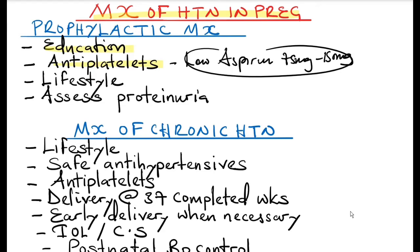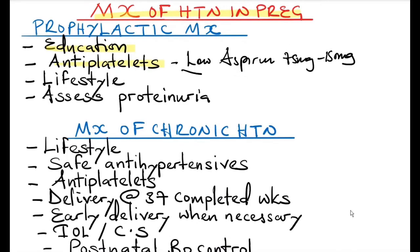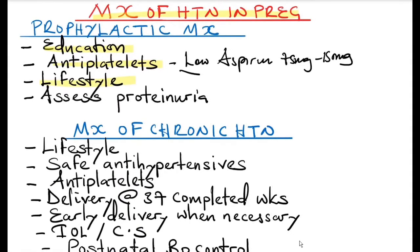High-risk patients include those with hypertensive disease during a previous pregnancy, chronic kidney disease, autoimmune disease such as systemic lupus erythematosus or antiphospholipid syndrome, diabetes, or chronic hypertension. Patients at moderate risk who can also receive low-dose aspirin include those having their first pregnancy, those over 40 years old, pregnancy interval of more than 10 years, BMI more than 35, family history of preeclampsia, and multi-fetal pregnancies like twins. Lifestyle changes including diet, exercise, and rest are encouraged for high-risk patients, and proteinuria should be assessed at each antenatal care visit.